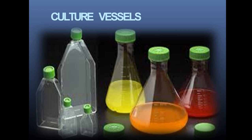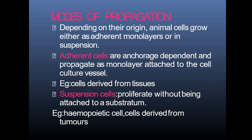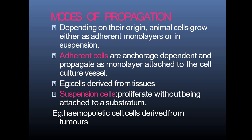After isolation, disaggregation, and placing cells in culture media, cells can grow in two ways: adherent cells and suspension cells. Adherent cells are anchorage-dependent and propagate as monolayered sheets attached to the cell culture vessel — these are derived from tissues. Suspension cells proliferate without being attached to the substratum; examples include hematopoietic cells and cells derived from tumors, which are suspended in the culture media.